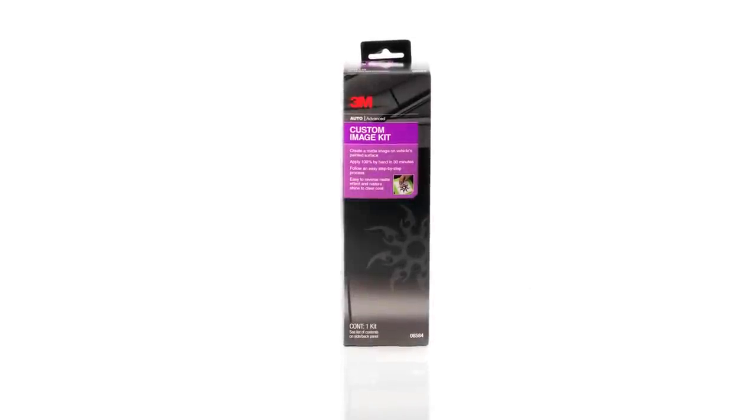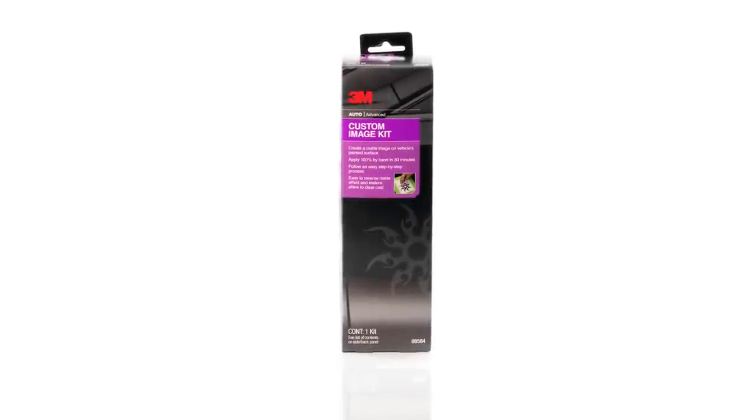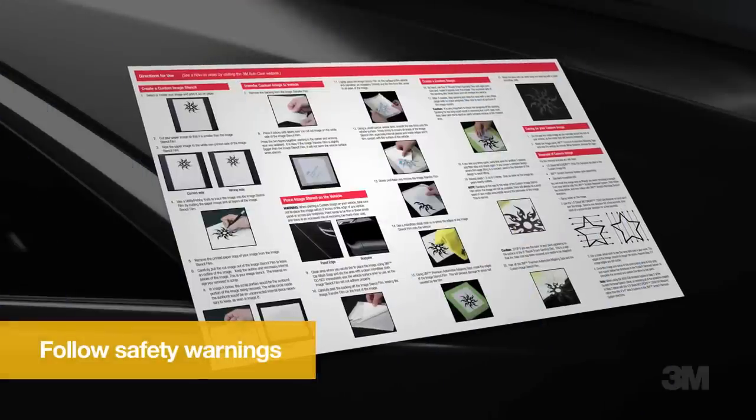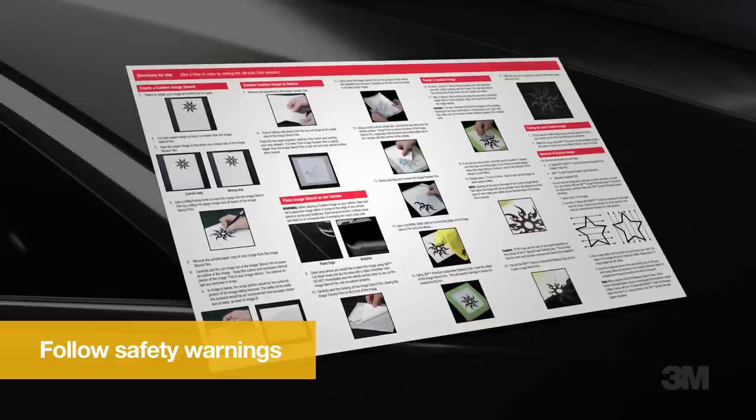With the 3M Custom Image Kit, you can create or print a stencil of your choice, place it on your vehicle and lightly sand the clear coat to create a matte finish image. Read the directions for use that come with the kit and follow the safety precautions carefully.